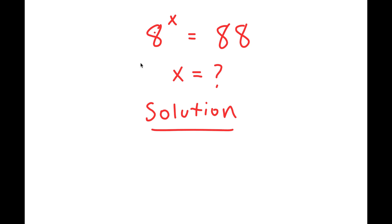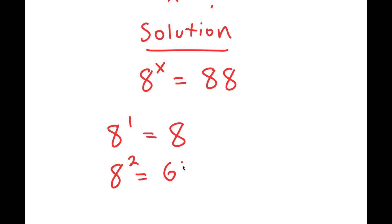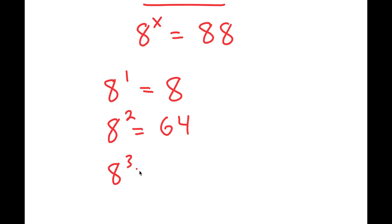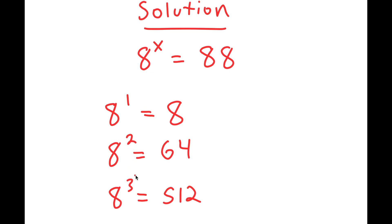What I'm first going to do is rewrite my equation down here so I have a little more solving space. My equation is 8 to the power of x is equal to 88. Before we even start solving this, we should notice that 8 to the power of 1 is equal to 8, 8 to the power of 2 is equal to 64, and 8 to the power of 3, which is 64 times 8, is 512. So x is going to be somewhere in between 2 and 3, and it's obviously going to be a decimal.